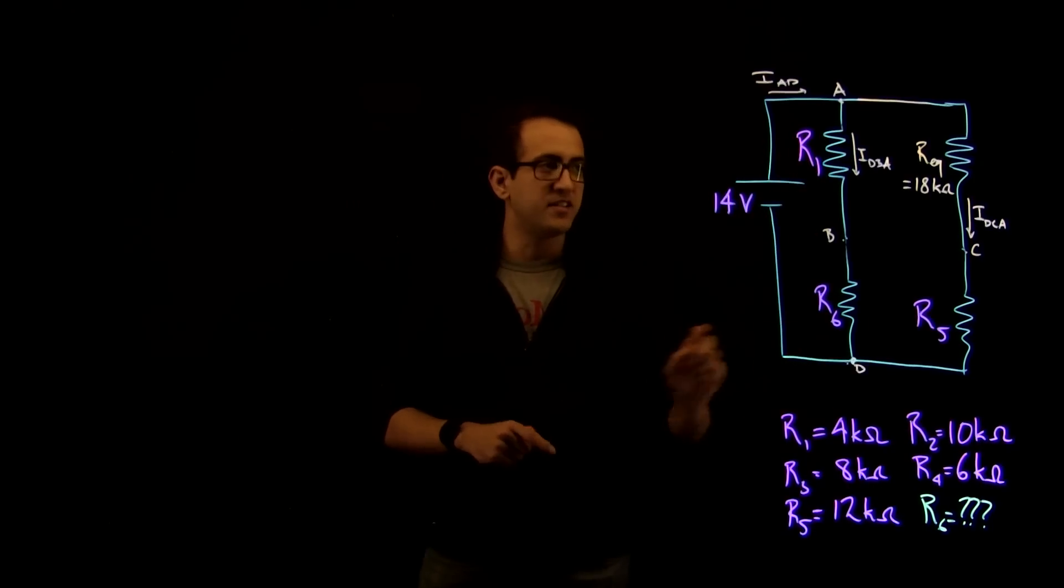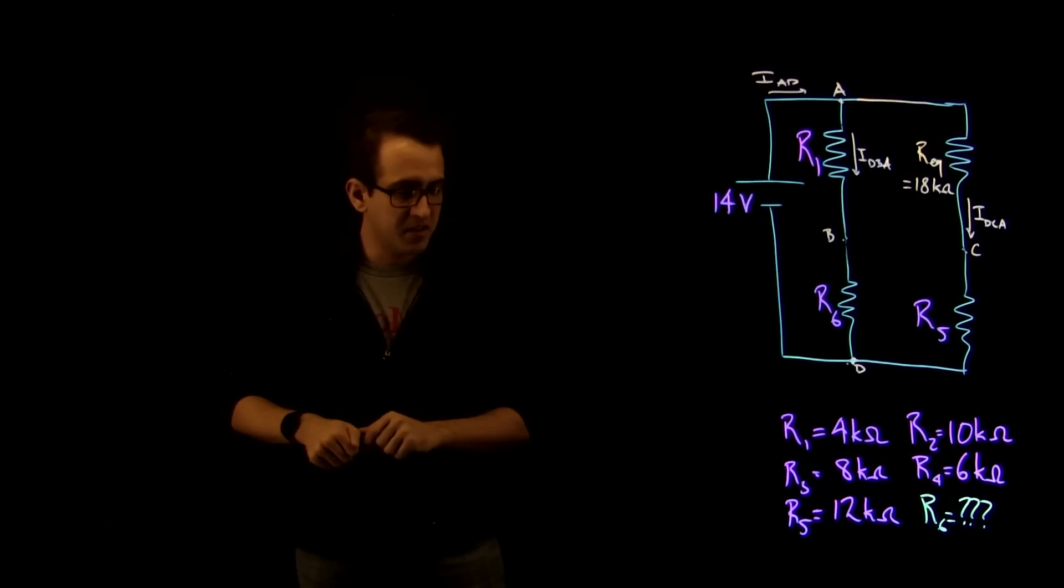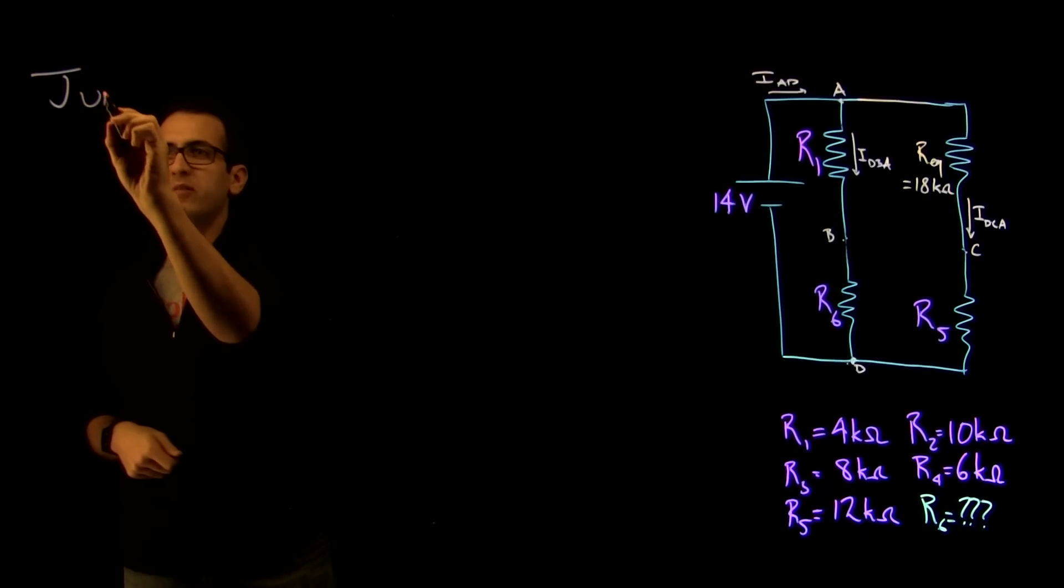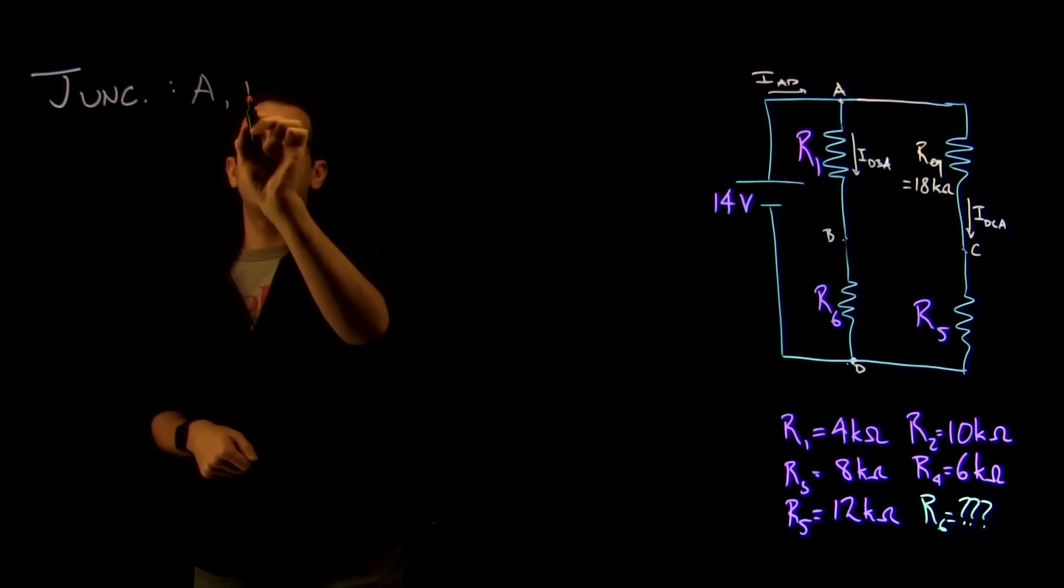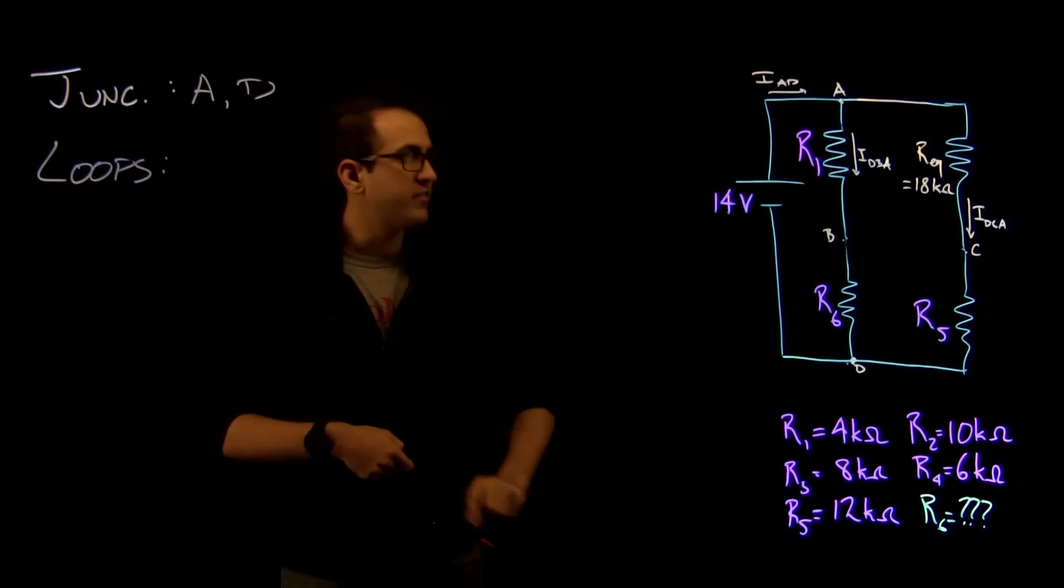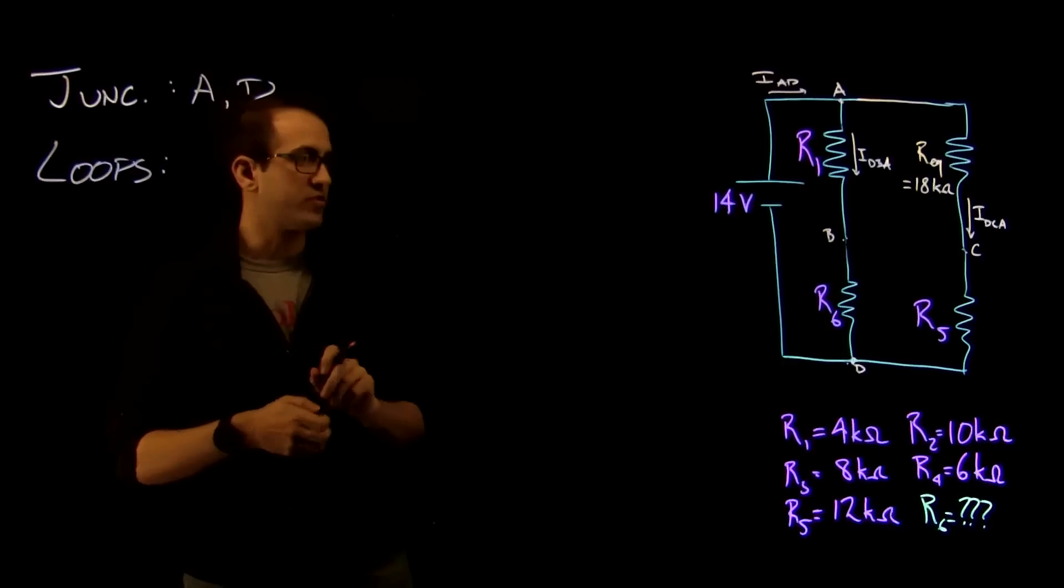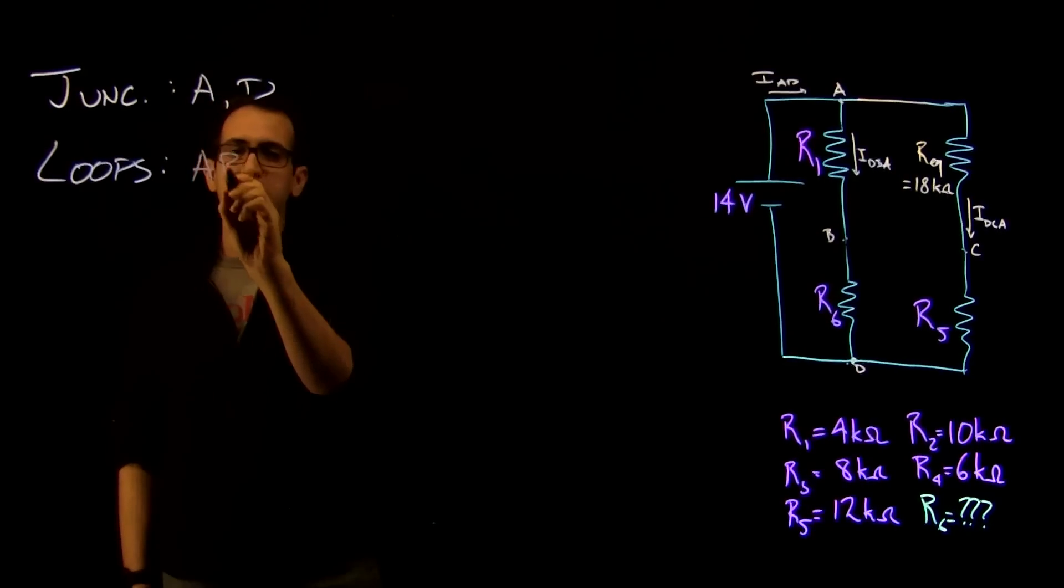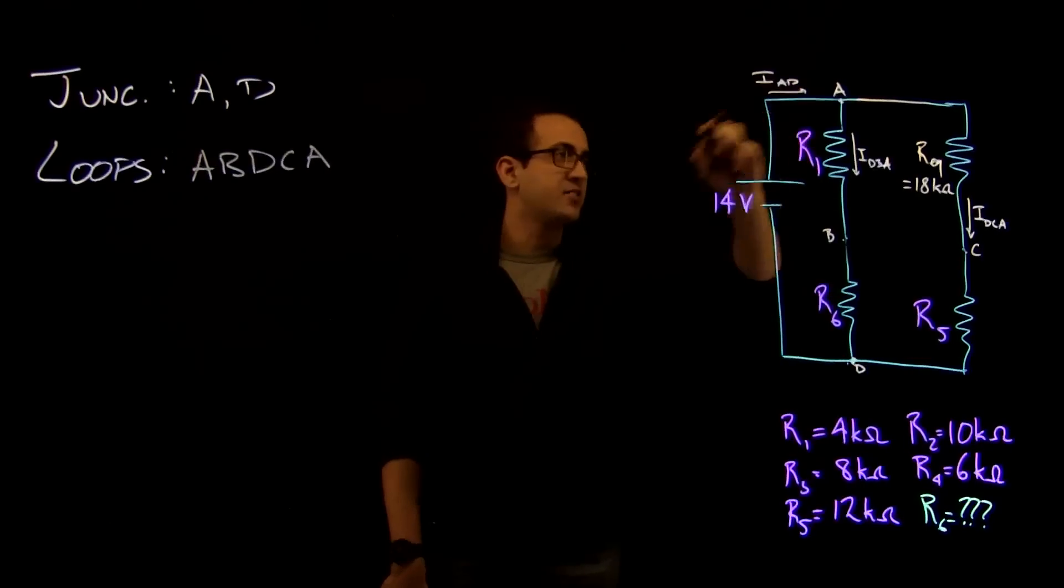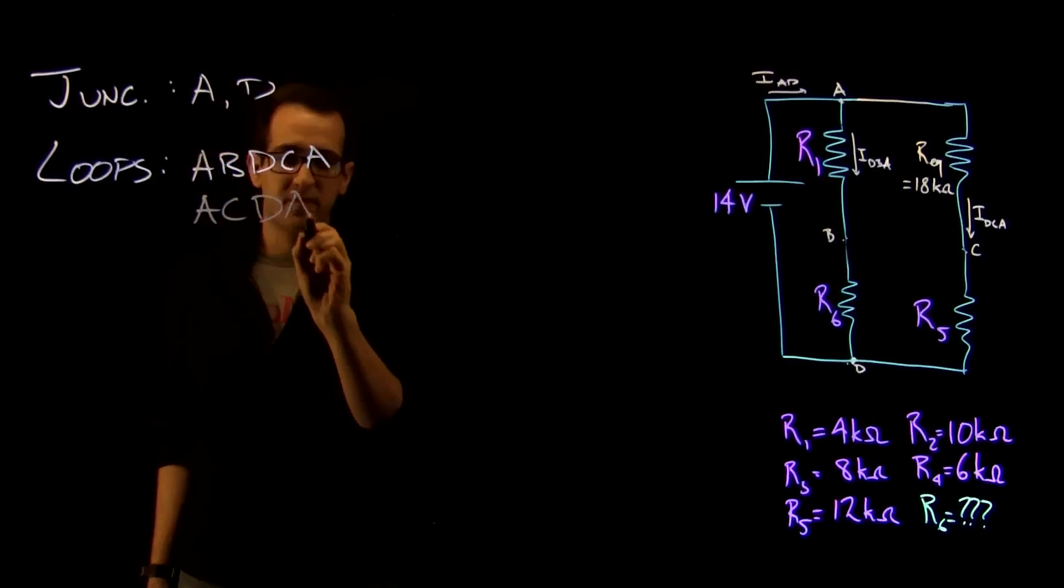We've already identified junctions A and D as our only two junctions. B and C used to be junctions but they no longer are because there's no resistor there. And now we have to identify some loops. So the first thing we're going to do is we're going to start writing some information down. Our junctions are A and D, and we have our loops. The first loop we have is ABDCA, so that's this loop internally which involves all four resistors. And we have another loop which is ACDA.